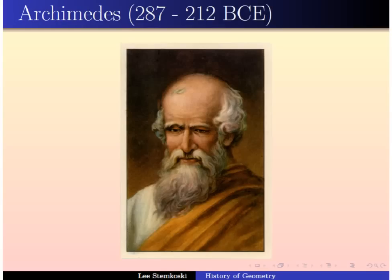After Euclid, Archimedes was also quite famous. He's generally considered one of the greatest mathematicians of all time. He did work in geometry as well as other areas. He's credited with approximating the value of pi using a numerical method of iteration, and also with being able to sum an infinite series. He used the method of exhaustion — the idea of approximations which approach the true value — in this case to approximate the area underneath a parabola.